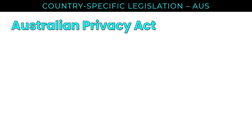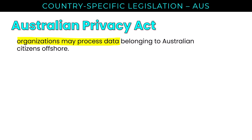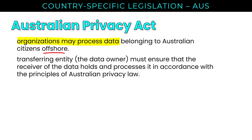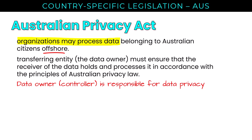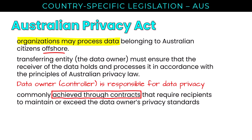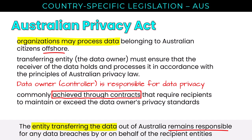The Australian Privacy Act allows organizations to process data belonging to Australian citizens offshore, but demands that the transferring entity ensure the receiver holds and processes data in accordance with Australian privacy law principles. Compliance is typically achieved contractually, but the entity transferring data out of Australia remains responsible for any breaches by recipient entities — the data owner can mitigate risk but cannot transfer responsibility. Canada's Personal Information Protection and Electronic Documents Act (PIPEDA) is a national law restricting how commercial businesses may collect, use, and disclose personal information, covering DNA, age, medical data, education, employment, financial information, and more, including a data breach notification requirement.